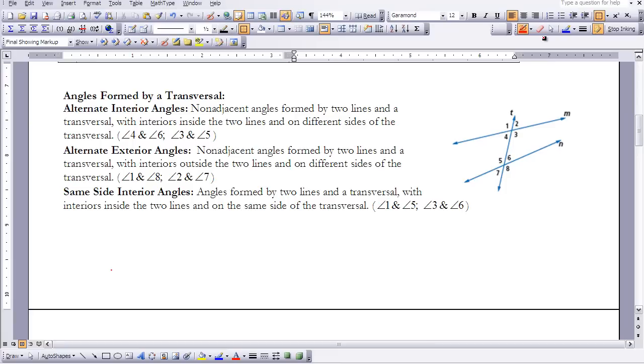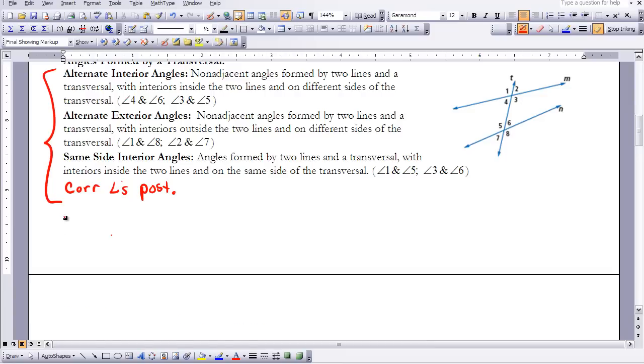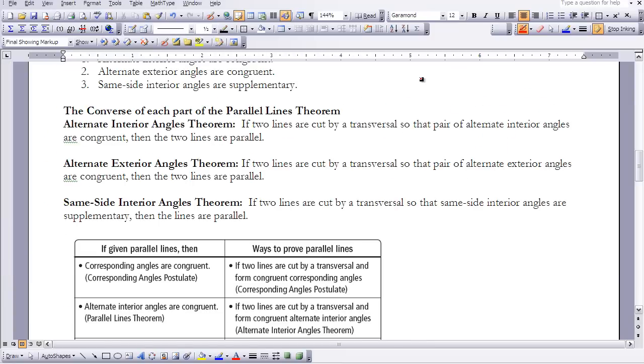The other one is the corresponding angles postulate that we studied back in Chapter 3. So these 4 are going to be very important to you as we progress through our proof portion of this course. Now let's move on to the next set of information here.